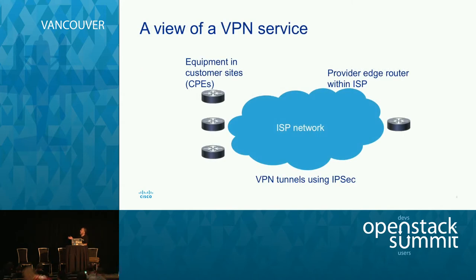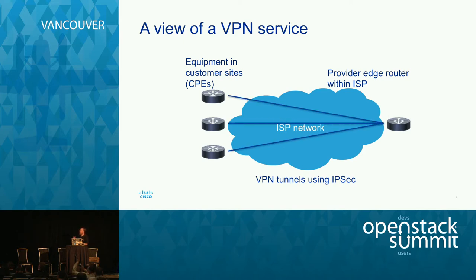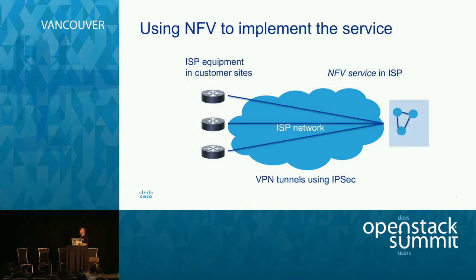The ISP puts a box in your site — called a CPE, customer premise equipment — and in the ISP you usually have a router that terminates those connections. We then make VPN tunnels using IPsec that join each of the CPEs together into an overall network. If we're using NFV to implement that, we replace the actual physical box with a virtualized system.